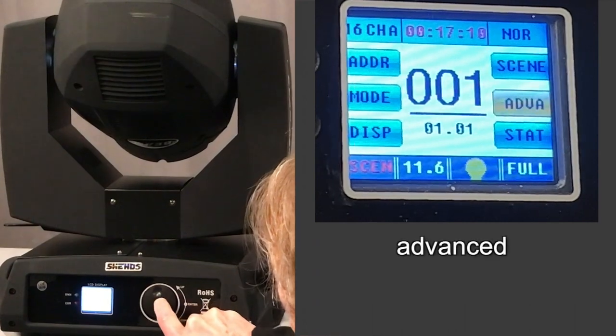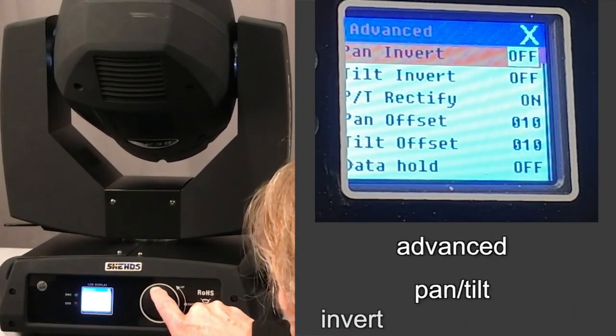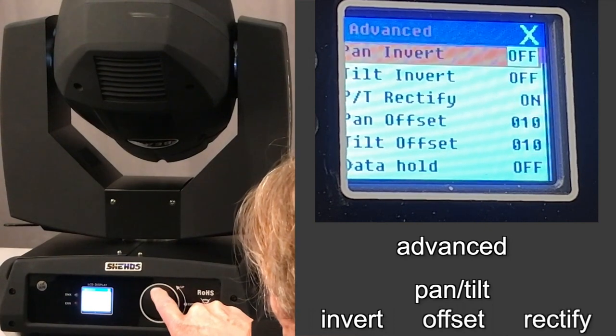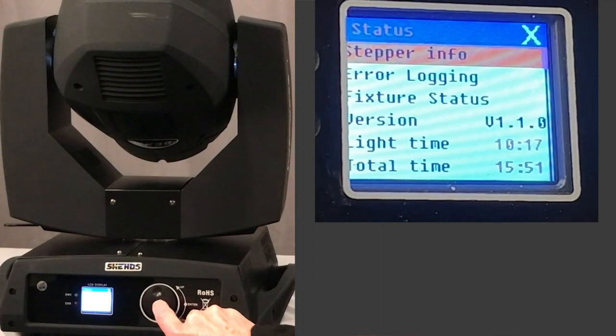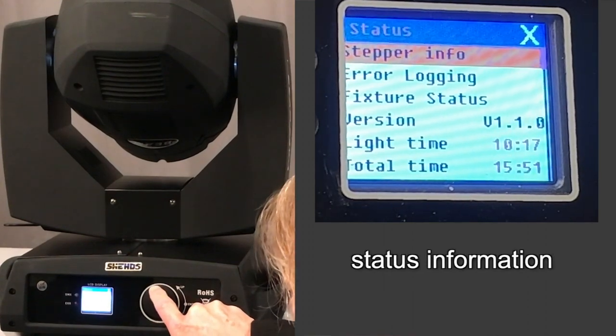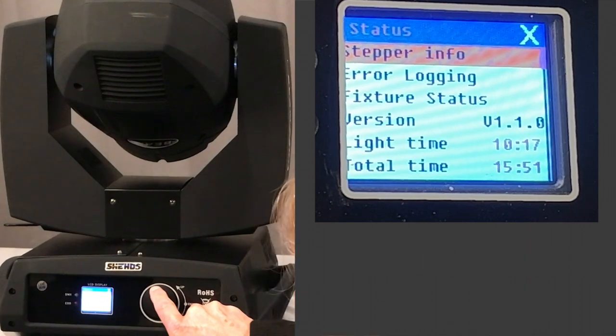In this advanced page, you can do things like invert the pan and tilt, offset the pan and tilt, etc. And then the last page is a stat page that shows you information such as the total runtime, software version, etc.